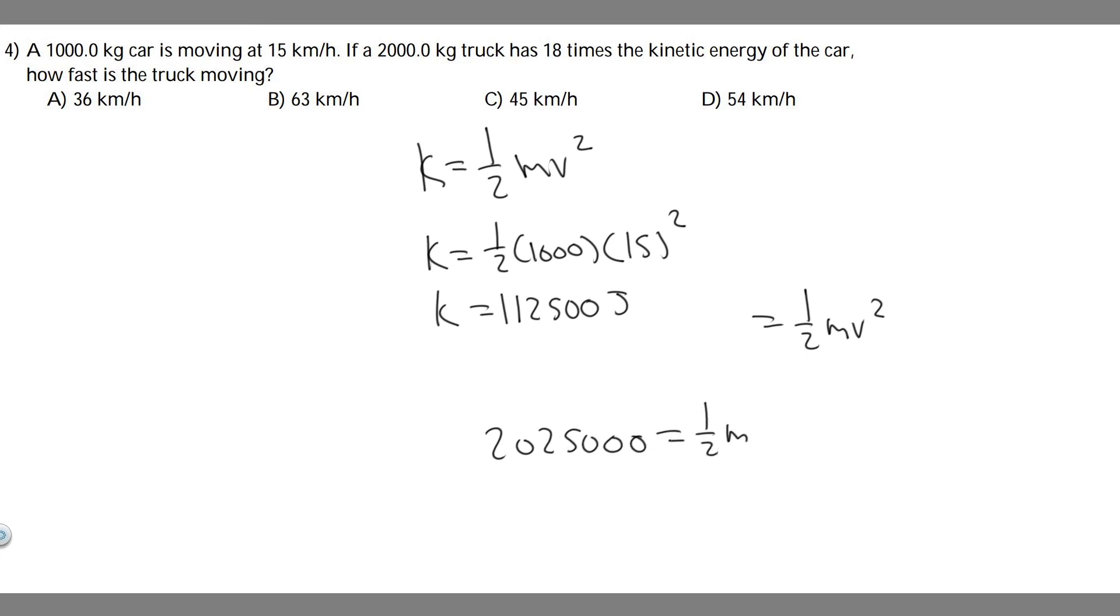This is going to equal 1/2 mv squared. If we want to find the velocity, we need the mass. They tell us the mass of our second car is 2,000. So if we plug in 2,000 times v squared, keep in mind this 1/2 times 2,000 just becomes 1,000.